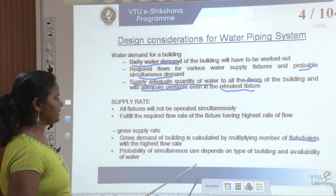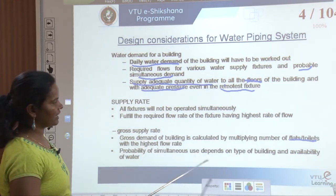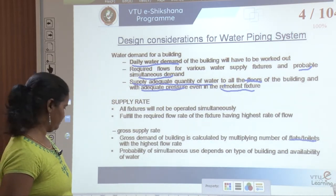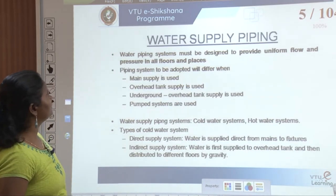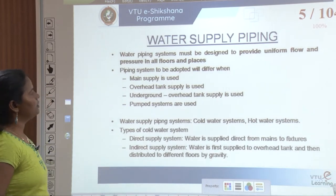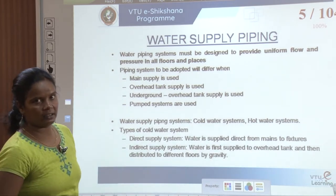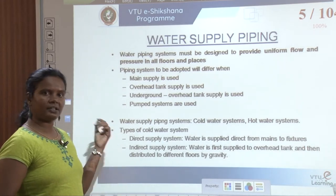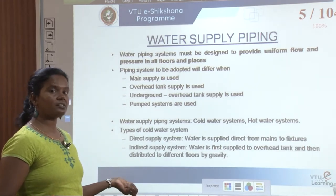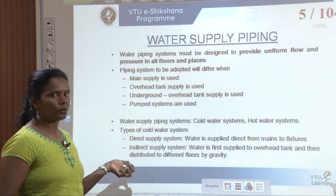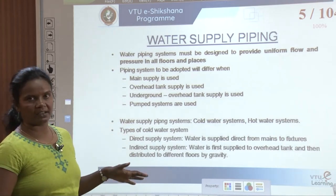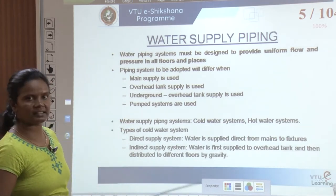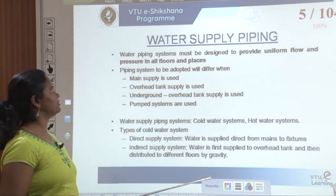Probability of simultaneous use depends on the type of building and availability of water. That background — already discussed in module 1 — was briefly revisited here to provide context for module 3.